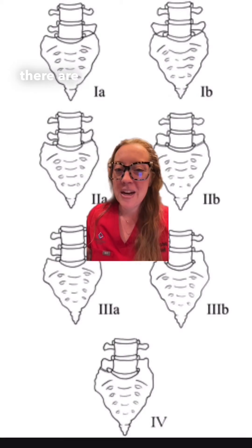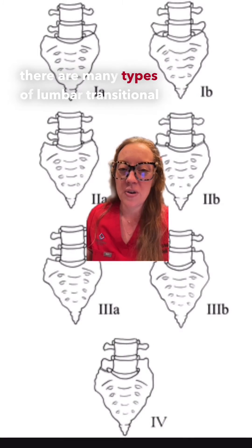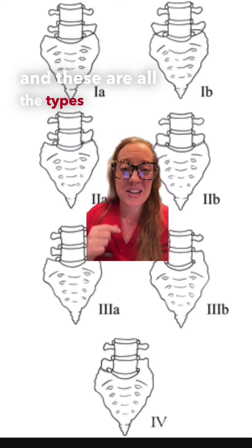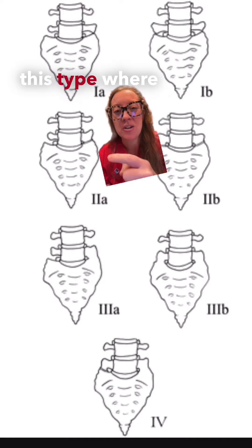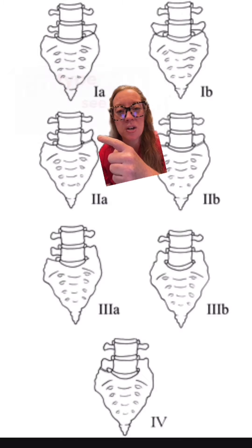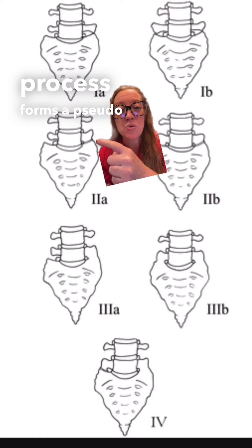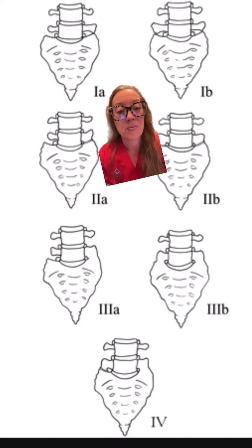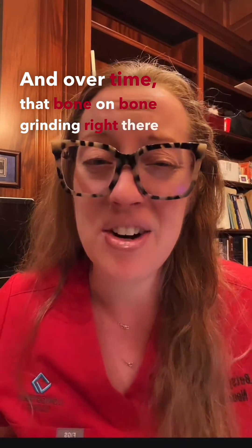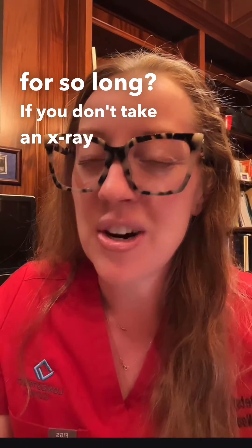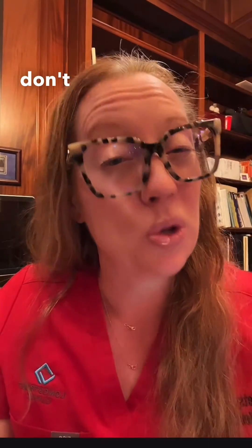In the words of Lady Gaga, these patients were born this way. There are many types of lumbar transitional vertebrae, and all the types are seen here. Our patient has this type where you can see the L5 transverse process forming a pseudo-joint with the sacrum. Over time, that bone-on-bone grinding right there hurts and causes pain.